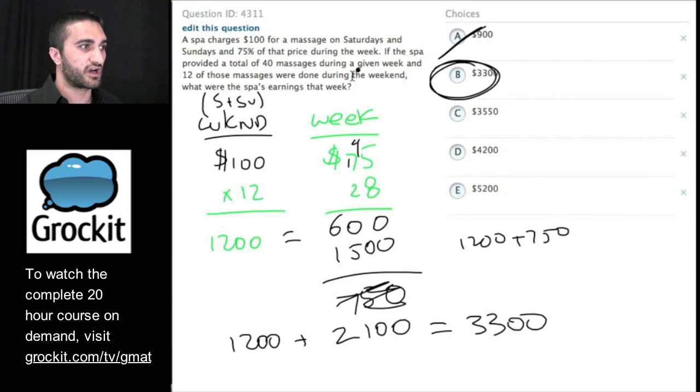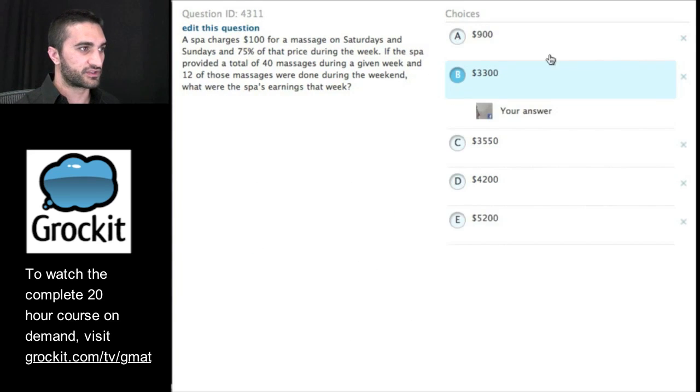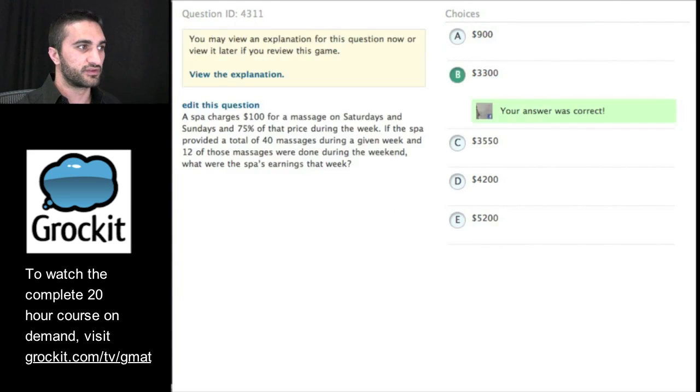Basically, in the end, we didn't do too much more than some arithmetic to solve this question. So we really just dissected it as we went. A spa charges $100 on the weekend, 75% of that during the week. It does 40 total massages, 12 on the weekend, gives us this total, 28 left. Multiply, add these two numbers, and we're done. So anticipate these sorts of word problems on the GMAT.